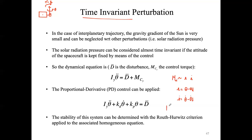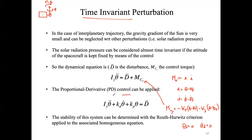A PD controller assumes a control torque directly proportional to the error. It will be Kp times E — so theta minus theta desired — minus Kd times theta-dot minus theta-dot desired. If you substitute that into the equation and assume the desired pitch angle is zero and we want a still spacecraft with zero desired angular velocity, we converge to the resulting equation.